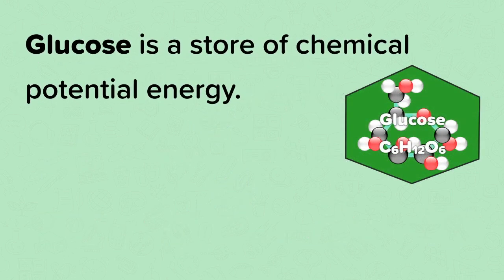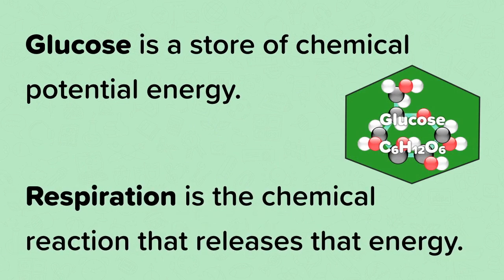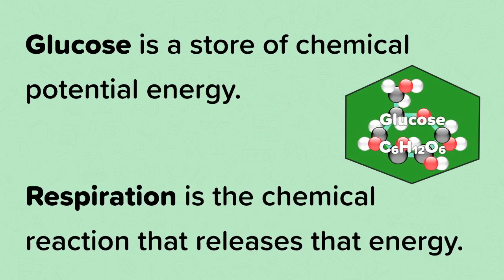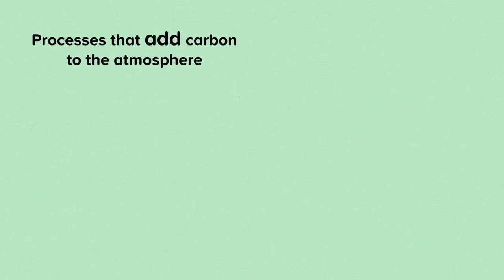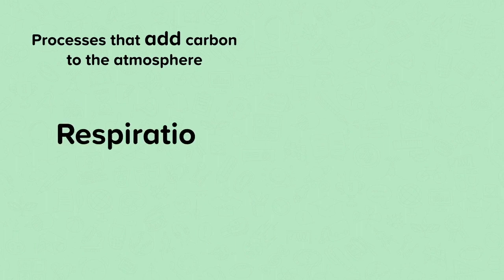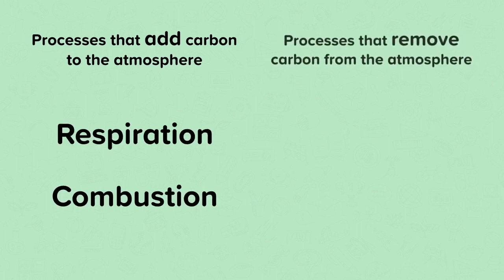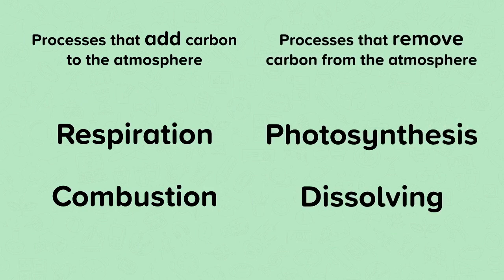Glucose is a store of chemical potential energy, and respiration is the chemical reaction that releases that energy. To recap: the processes that add carbon to the atmosphere are respiration and combustion. The processes that remove carbon from the atmosphere are photosynthesis and dissolving.